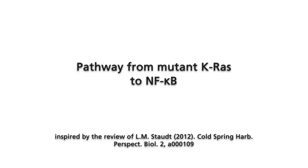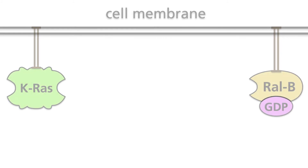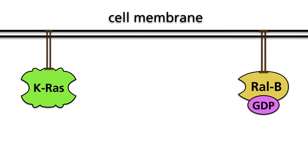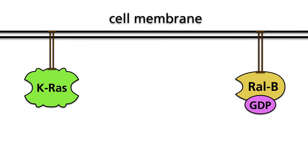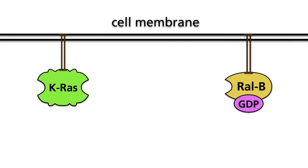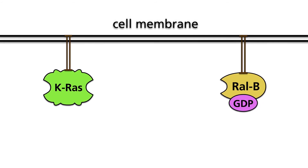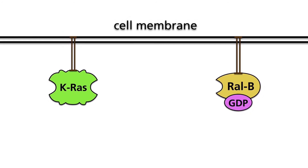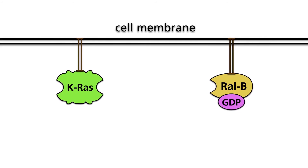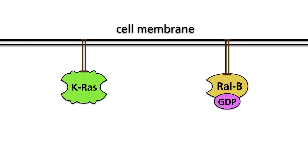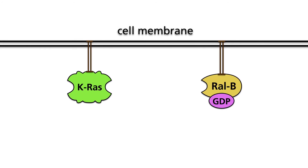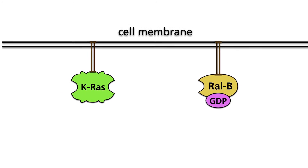There is extensive crosstalk between NF-κB pathways and other pathways, notably the MAP kinase pathway, with the key control switch, the proto-oncoprotein KRAS. In a variety of carcinomas, particularly lung carcinomas, it has been shown that the transcription of NF-κB genes is enhanced with mutant, but not with wild-type KRAS.